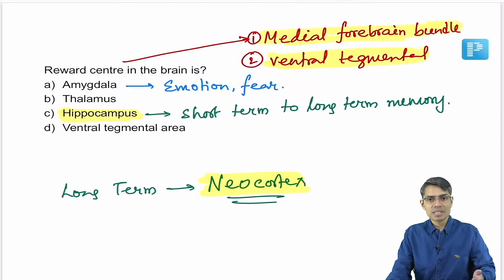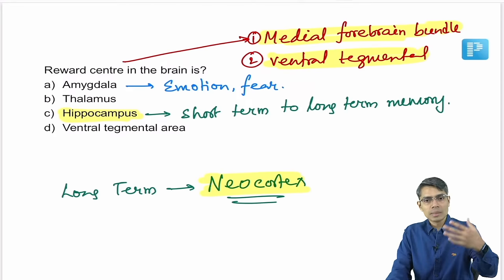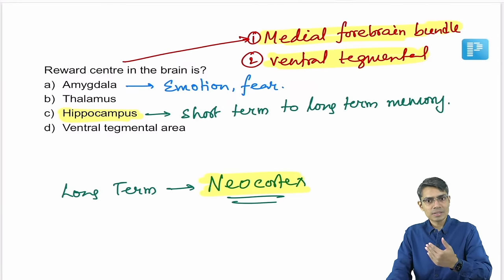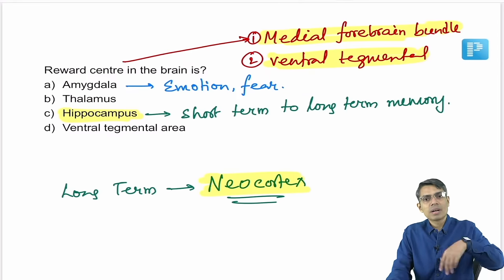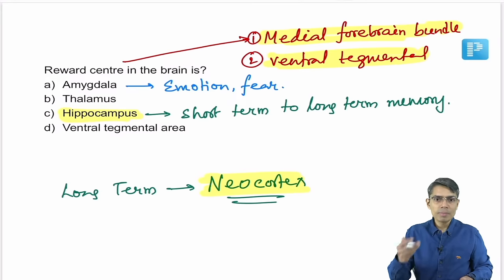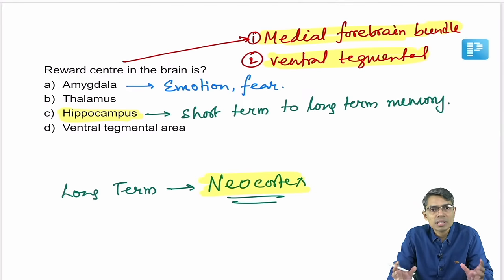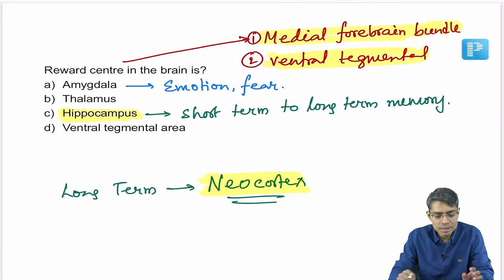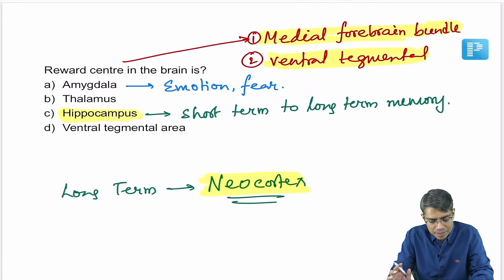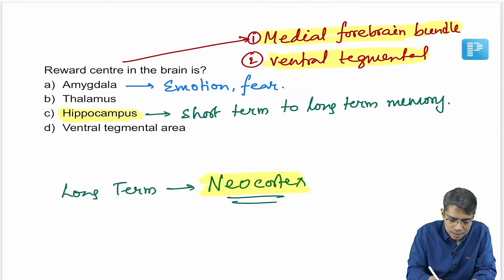The Papez circuit includes hippocampus, amygdala, anterior nucleus of hypothalamus, and parahippocampal gyrus, controlling emotion, fear response, and recent memory. Individual nucleus functions must be remembered separately. For the reward centre question, the best answer is the ventral tegmental area.